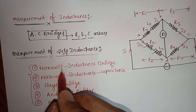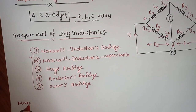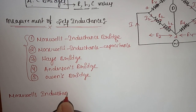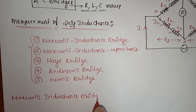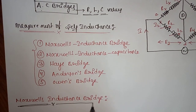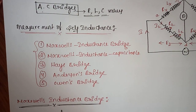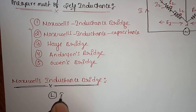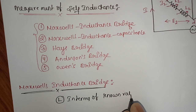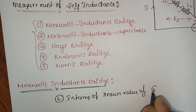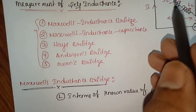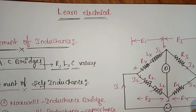Now we will discuss about Maxwell's inductance bridge. In Maxwell's inductance bridge, we have to calculate the unknown value of inductance in terms of the known value of inductance. That's why we call it Maxwell's inductance bridge. This is the circuit diagram for Maxwell's inductance bridge.